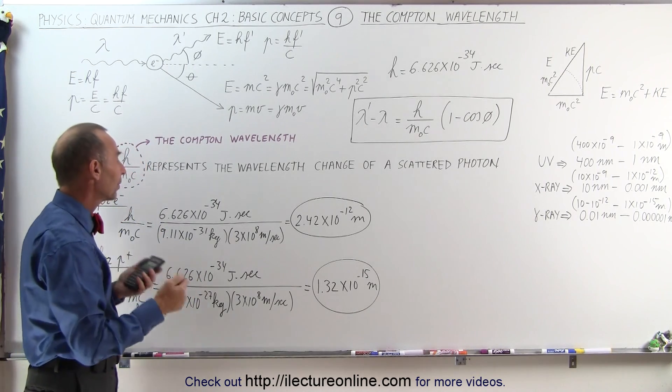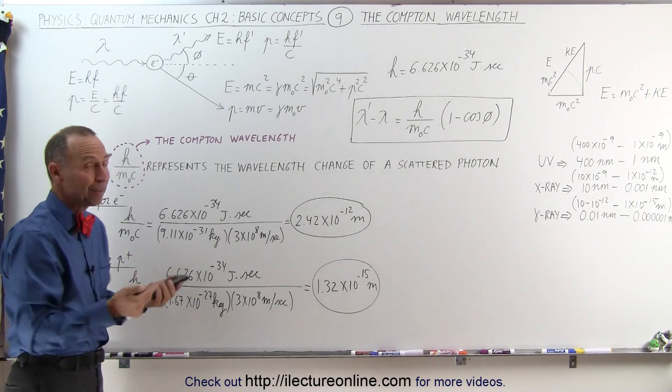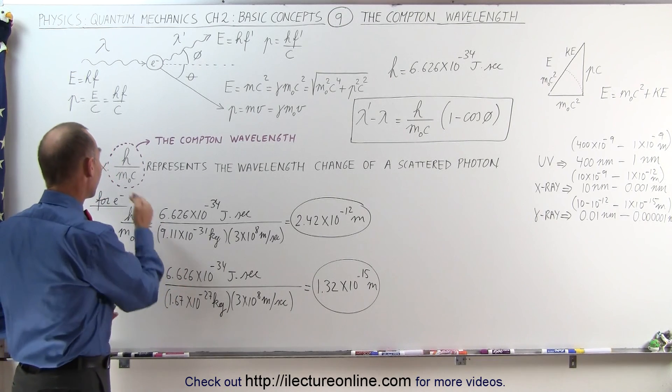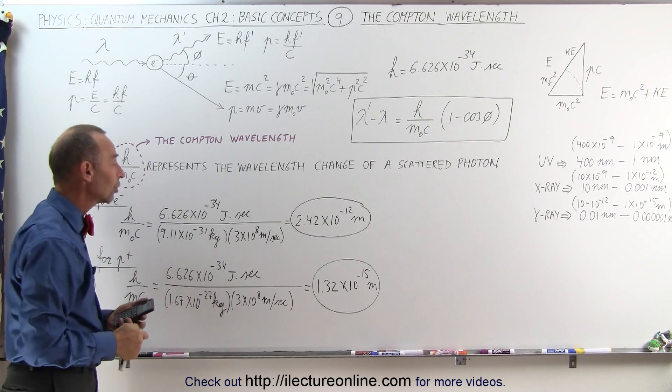the Compton Scattering Effect is typically seen when photons, typically x-ray photons, scatter off of electrons rather than off the nuclei of atoms.